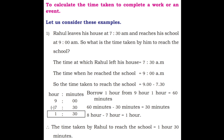We separate hours and minutes. 9 hours minus 7 hours, and 0 minutes minus 30 minutes. We borrow 1 hour from 9 hours. 1 hour is equal to 60 minutes. So, 60 minutes minus 30 minutes equals 30 minutes, and 8 minus 7 is 1. The time taken by Rahul to reach the school is equal to 1 hour 30 minutes.